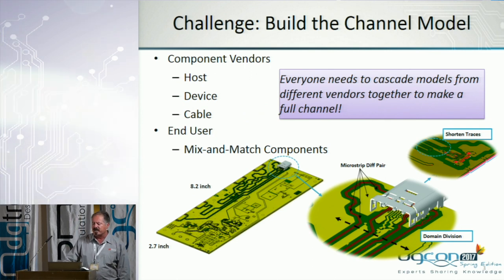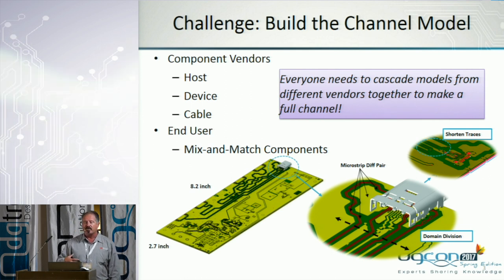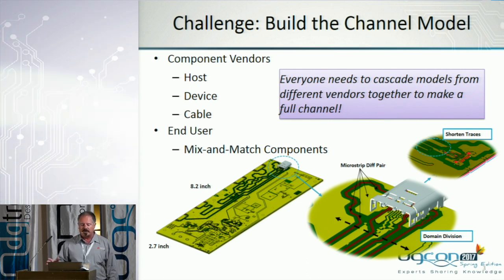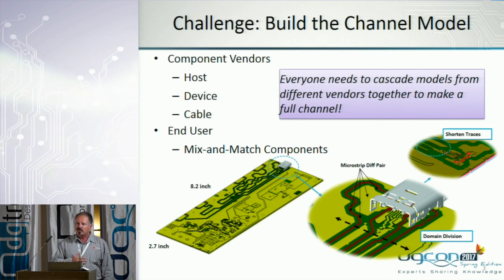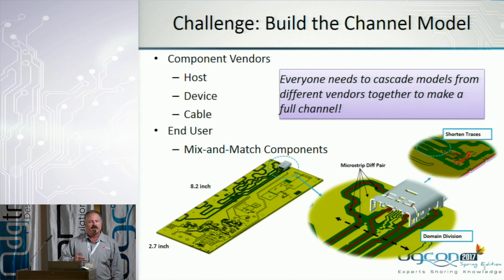I've had to learn vector network analysis and S-parameters, and this is true for most high-speed digital engineers today. One of the main challenges is building the channel model. We can use sophisticated modeling techniques, but I've been focusing on measurements in the lab. Many designers must cascade all the models from many different vendors into one channel — the end user must mix and match to get the optimum combination of interconnect, cables, and the whole channel. This is the price-performance challenge we must rise to.